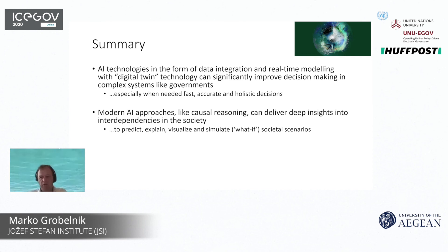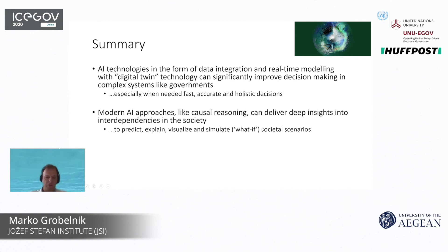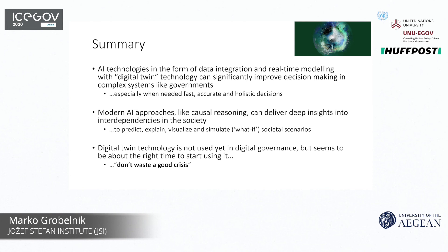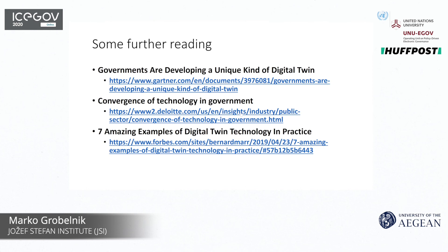Modern AI — not just the popular kind, but also less popular AI with elements of older AI — is where we need to search for solutions: prediction, explanation, visualization, and simulating societal scenarios. As I said, in digital governments this technology is not yet being used. I'll conclude with this: don't waste a good crisis — we have a good crisis now, so let's use it to change some of these government procedures.